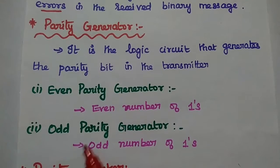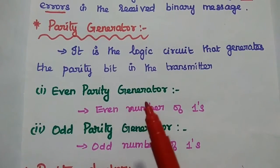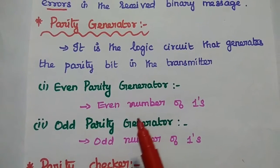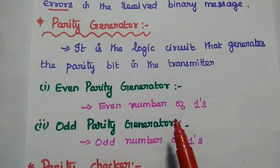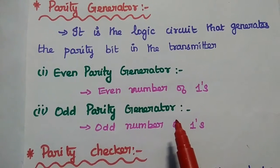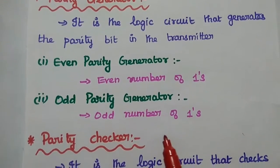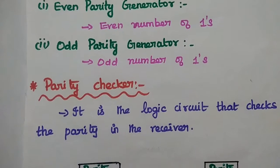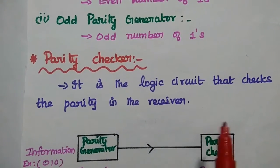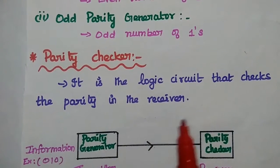The first one is parity generator. It is the logic circuit that generates the parity bit in the transmitter side. We can have even parity generator which will make the transmitted signal with even number of ones, and odd parity generator which can generate odd number of ones in the transmitted signal. At the receiver side, we can have the parity checker, which checks the parity in the receiver side.